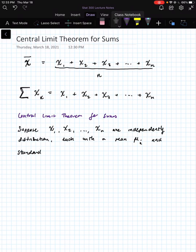Each with its own mean, mu sub i. So the i is going to indicate that each one has its own. For instance, it could be one, it could be two.